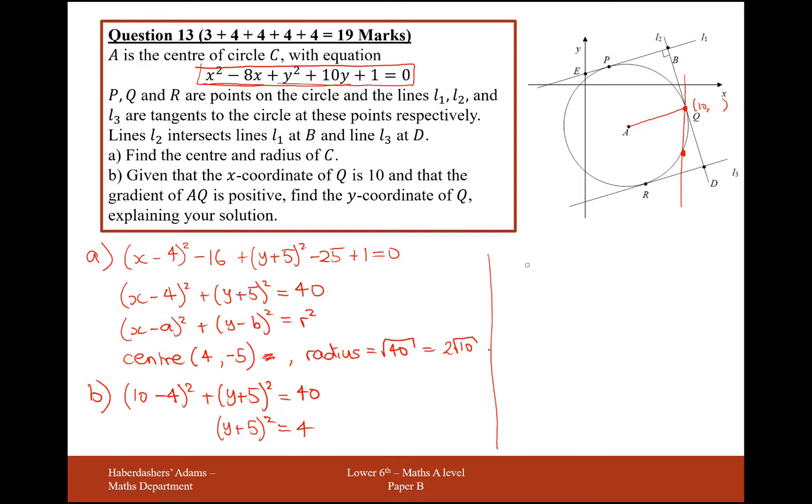Square root both sides now. Remember that whenever you square root, you get positive and negative. So it's positive and negative square root of 4, which is 2. And now we need to go ahead and work out y by splitting this up. So y plus 5 is either equal to 2, in which case y is equal to minus 3, or y plus 5 is equal to minus 2, in which case y is equal to minus 7. So it looks like this coordinate would be 10 minus 7, but this coordinate up here, the one that we're looking for, would have the coordinate 10 minus 3.